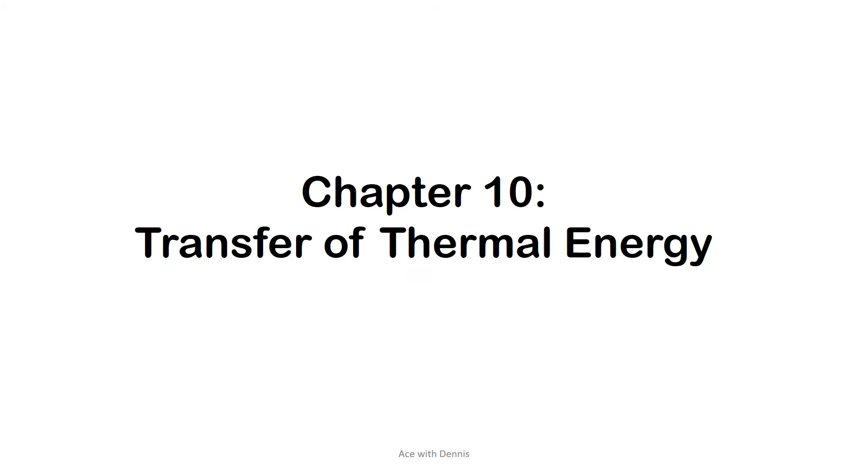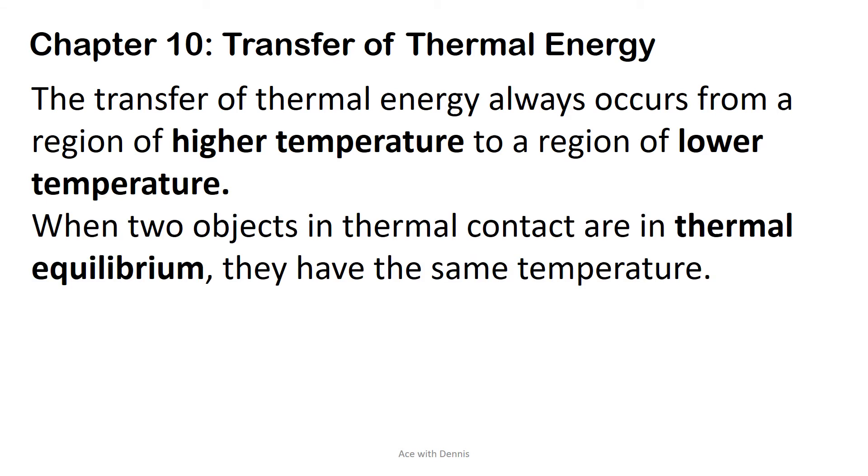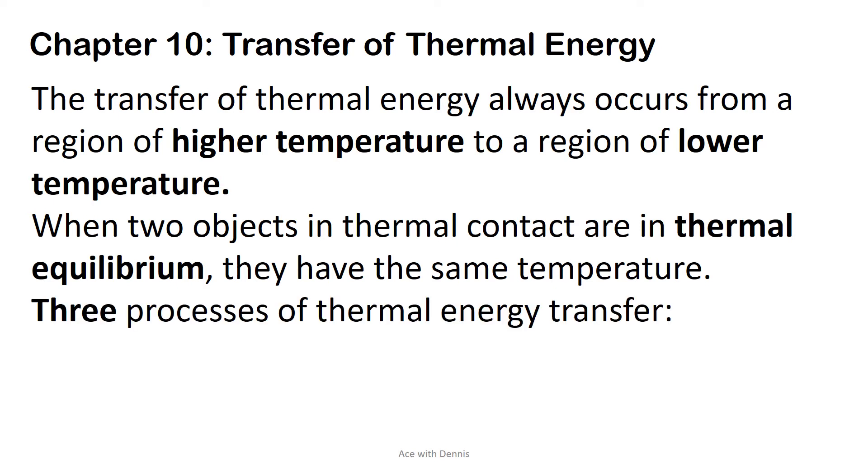Chapter 10: Transfer of Thermal Energy. The transfer of thermal energy always occurs from a region of higher temperature to a region of lower temperature. When two objects in thermal contact are in thermal equilibrium, they have the same temperature. There are three processes of thermal energy transfer: conduction, convection, and radiation.